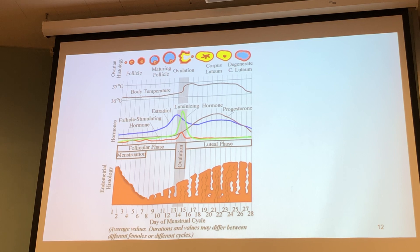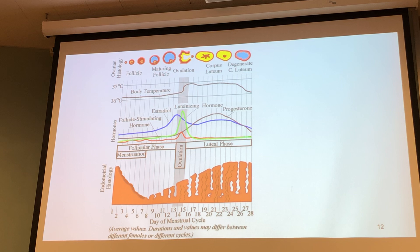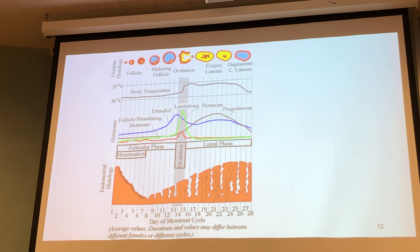One phase is called the follicular phase and the other is called the luteal phase. The follicular phase is the variable one — if the average menstrual cycle is 28 days, it can be as high as 35 or 40 days, sometimes longer. All of that variation happens in the follicular phase. The luteal phase is not variable; it's biologically concrete.